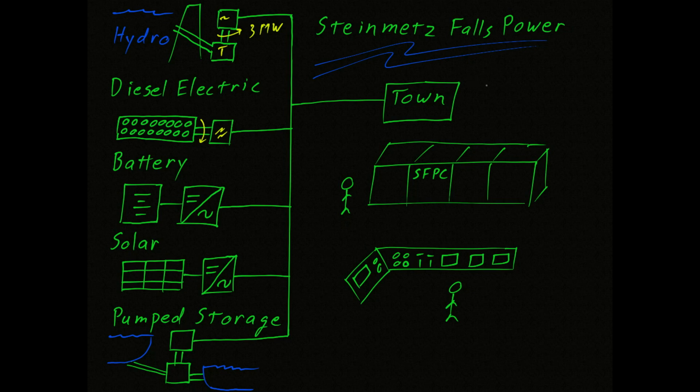Speaking of the town, a typical day looks something like this for the electrical usage. Here we have time on this axis, and power consumed in megawatts on this axis.